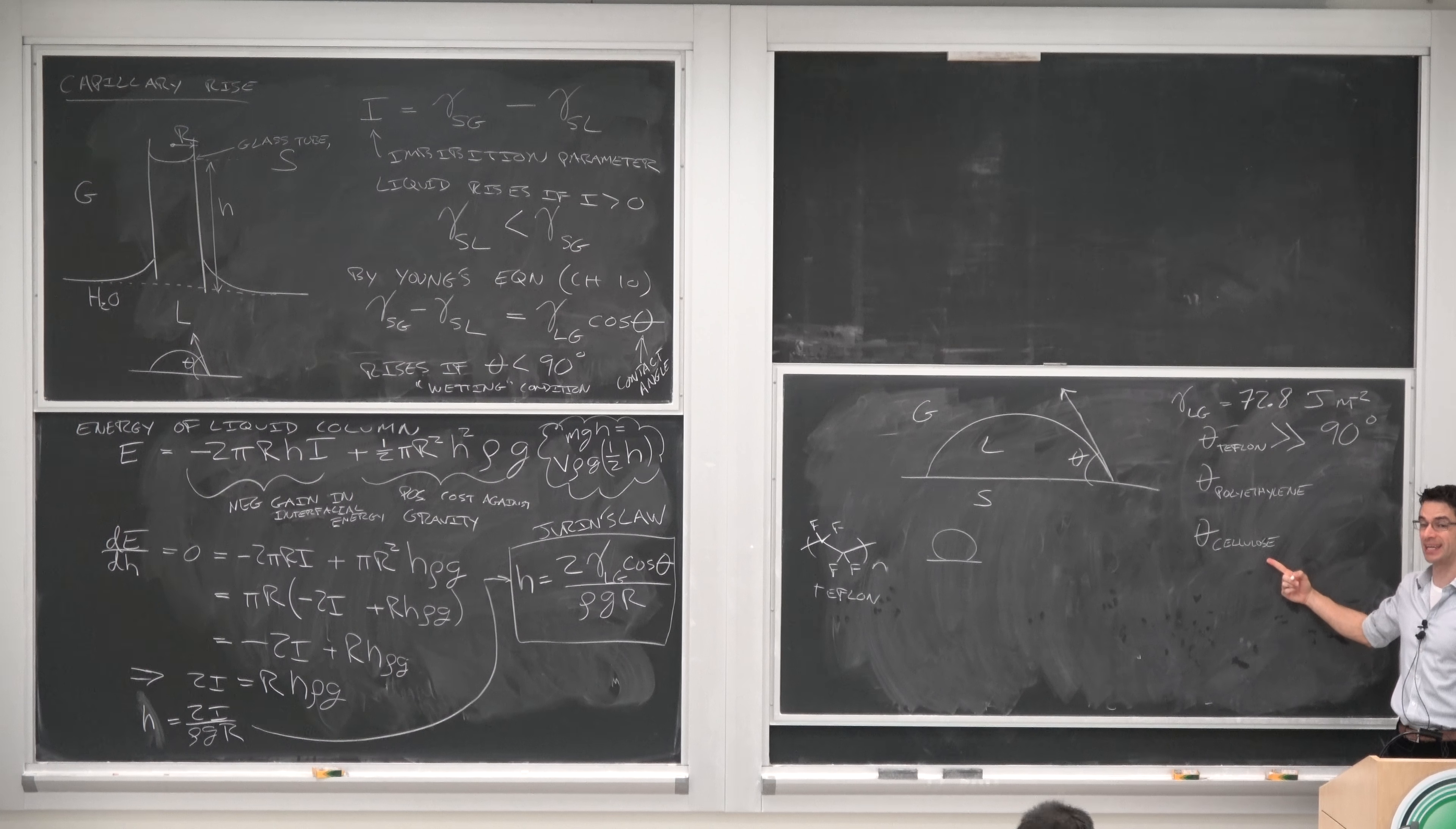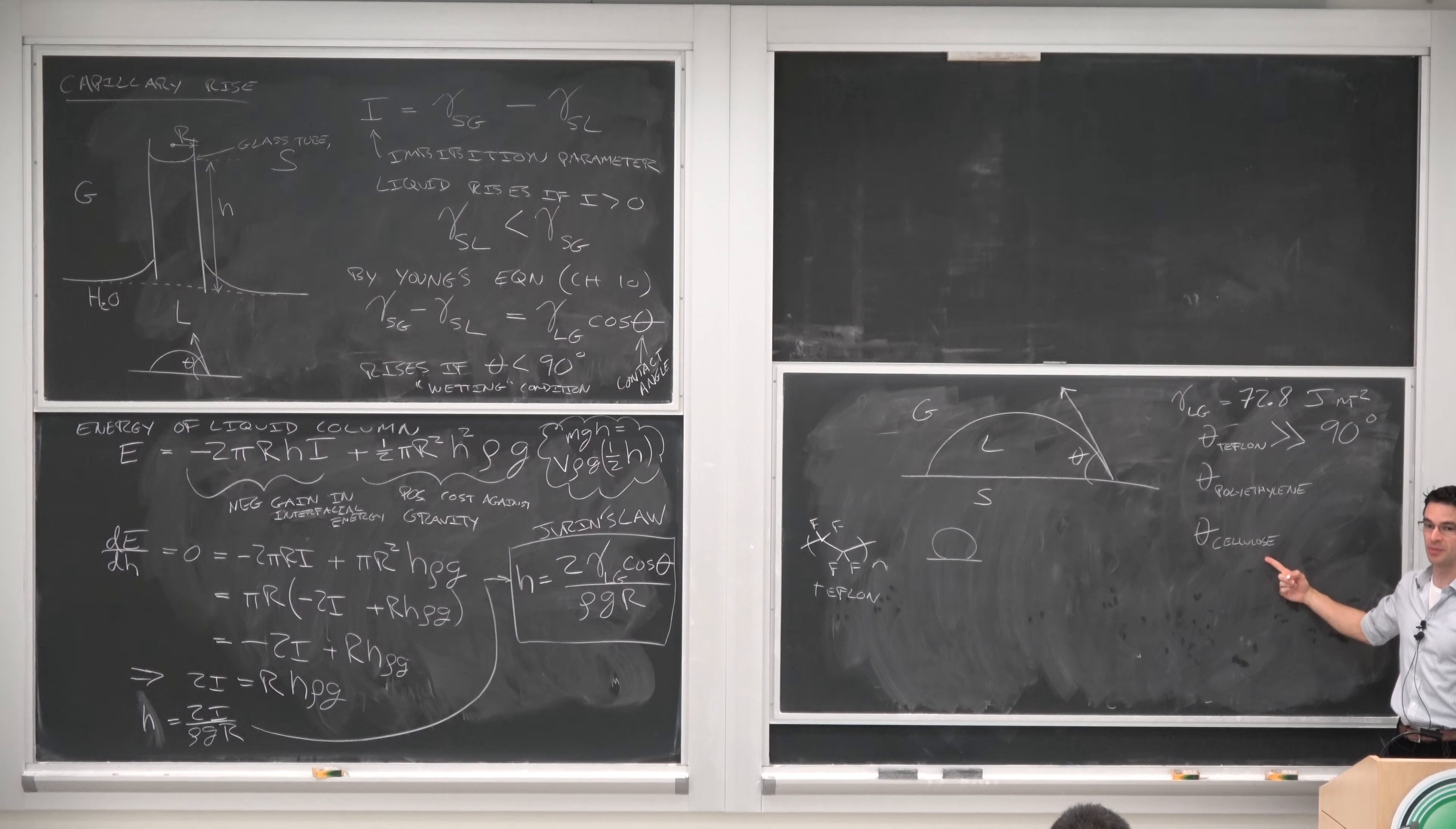Cellulose is a biopolymer, a carbohydrate. It has lots of OH groups on it, lots of dipoles. So it's probably going to be wetting. So we can say that the contact angle on cellulose is going to be less than 90 degrees.